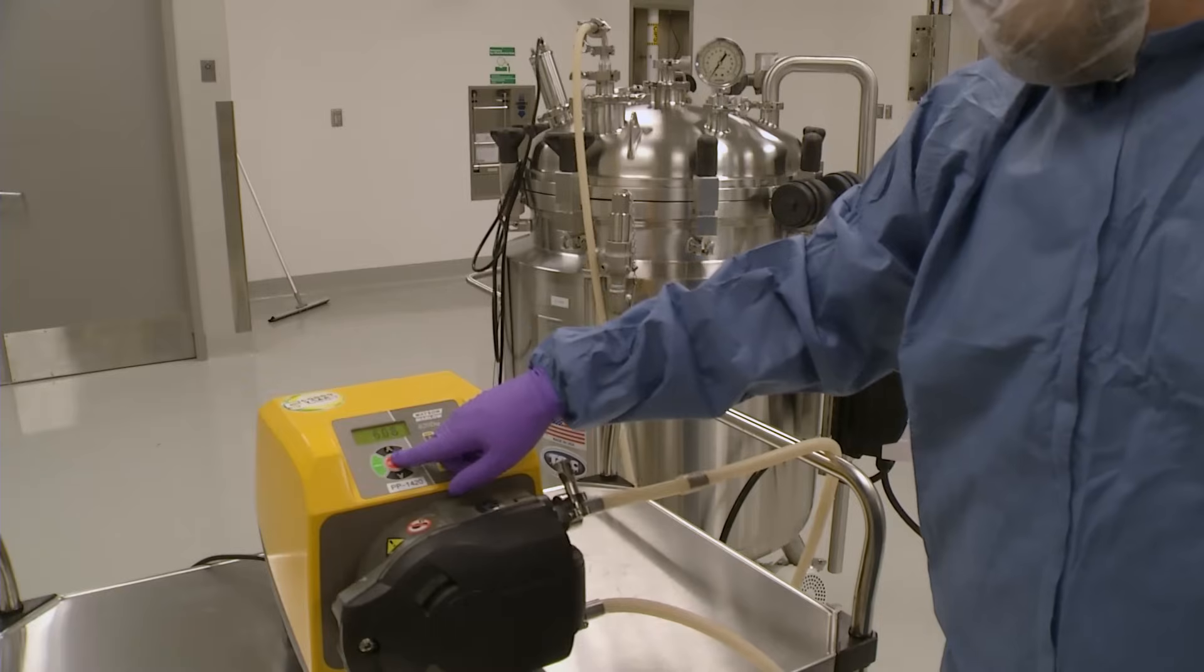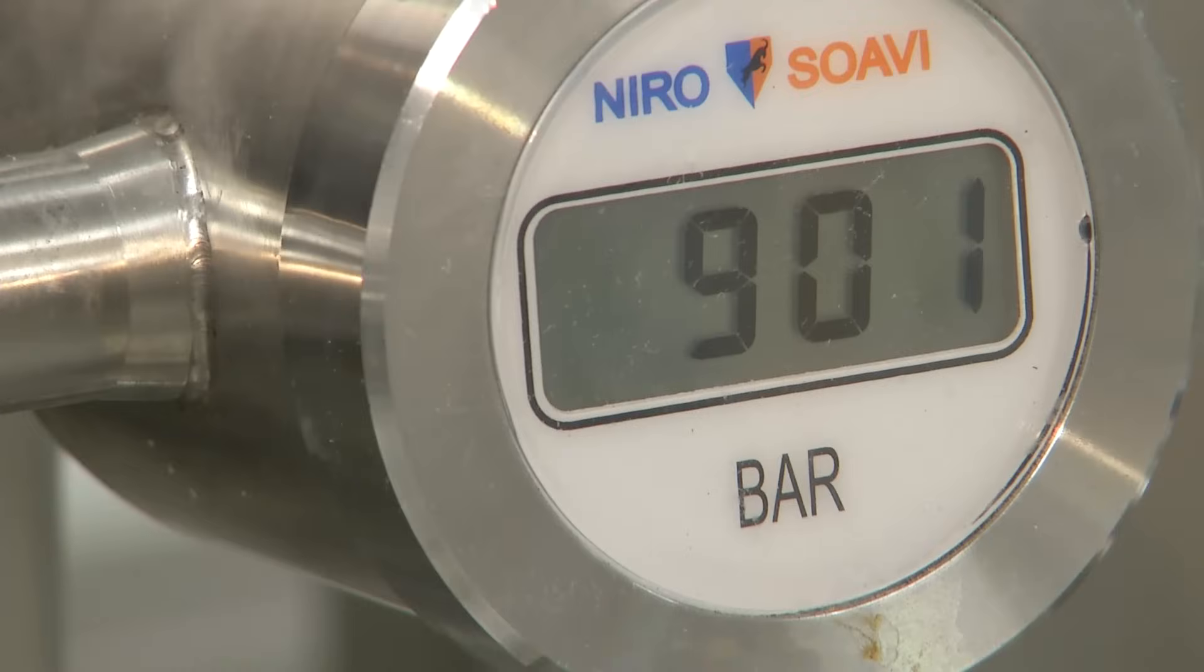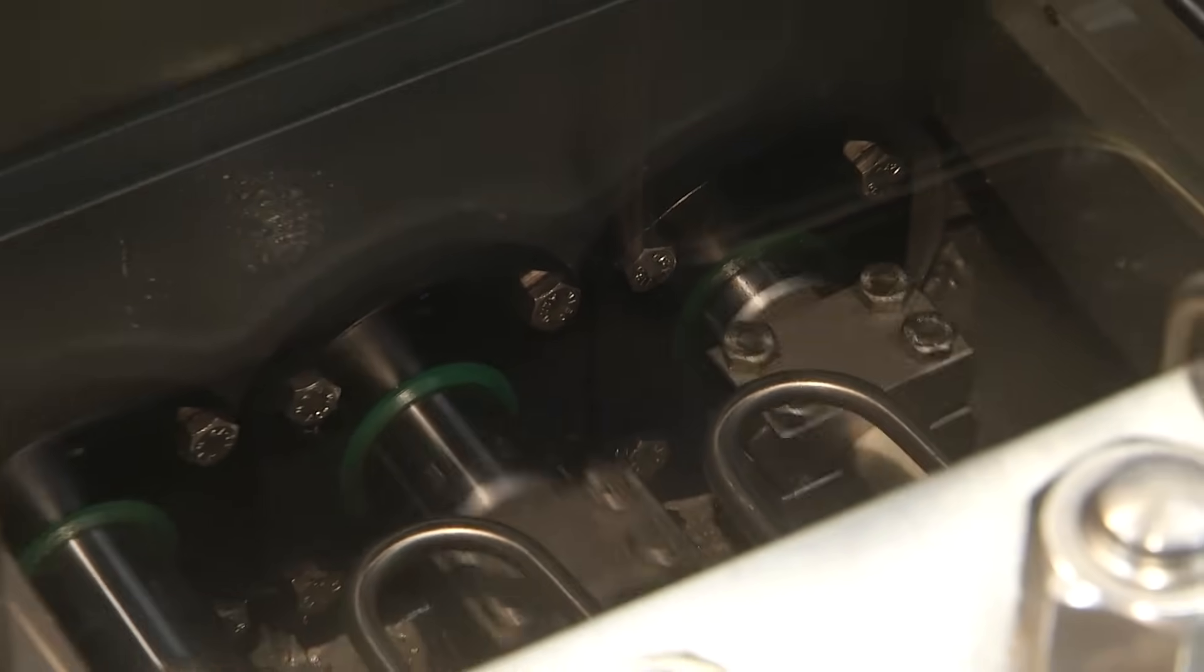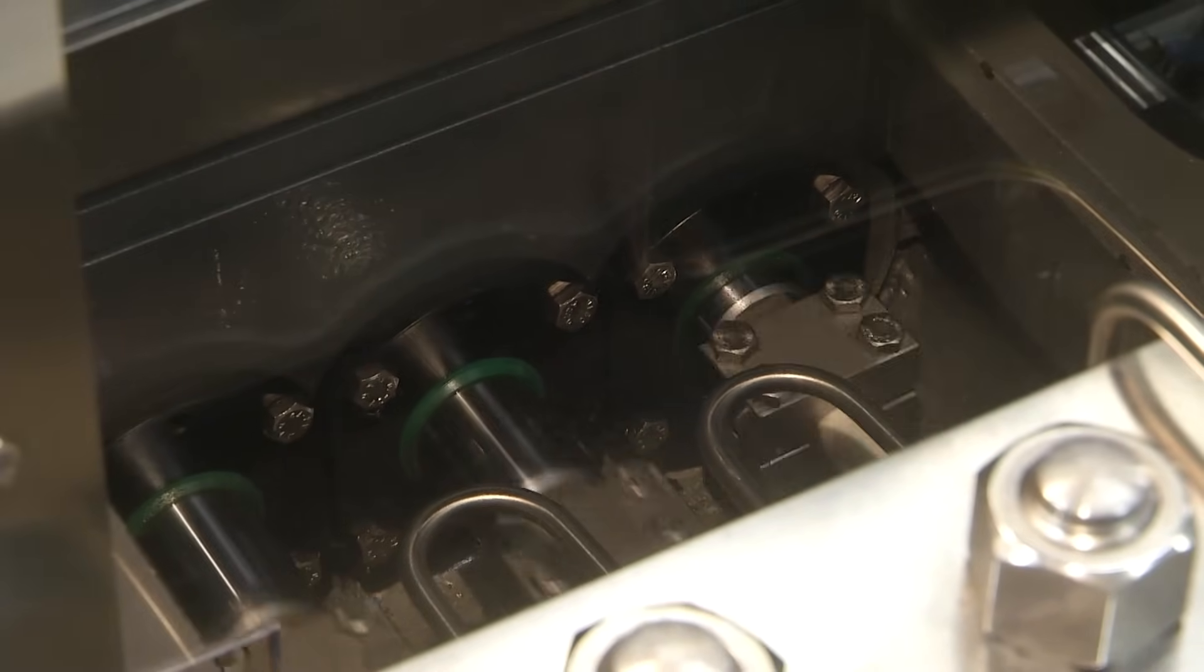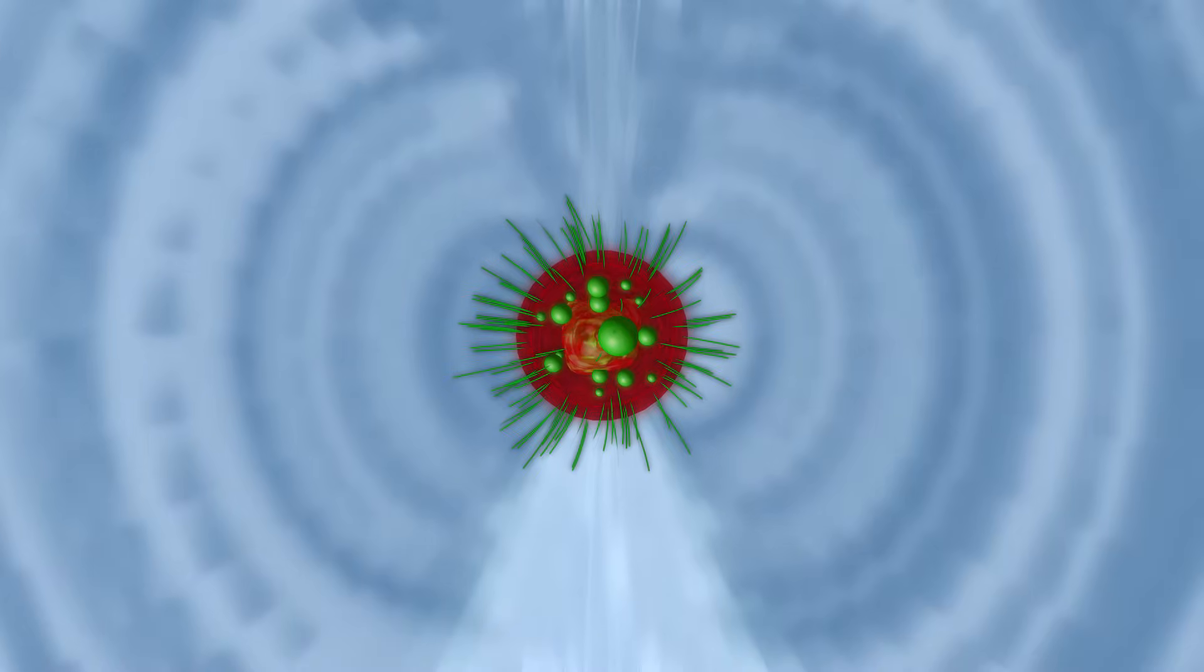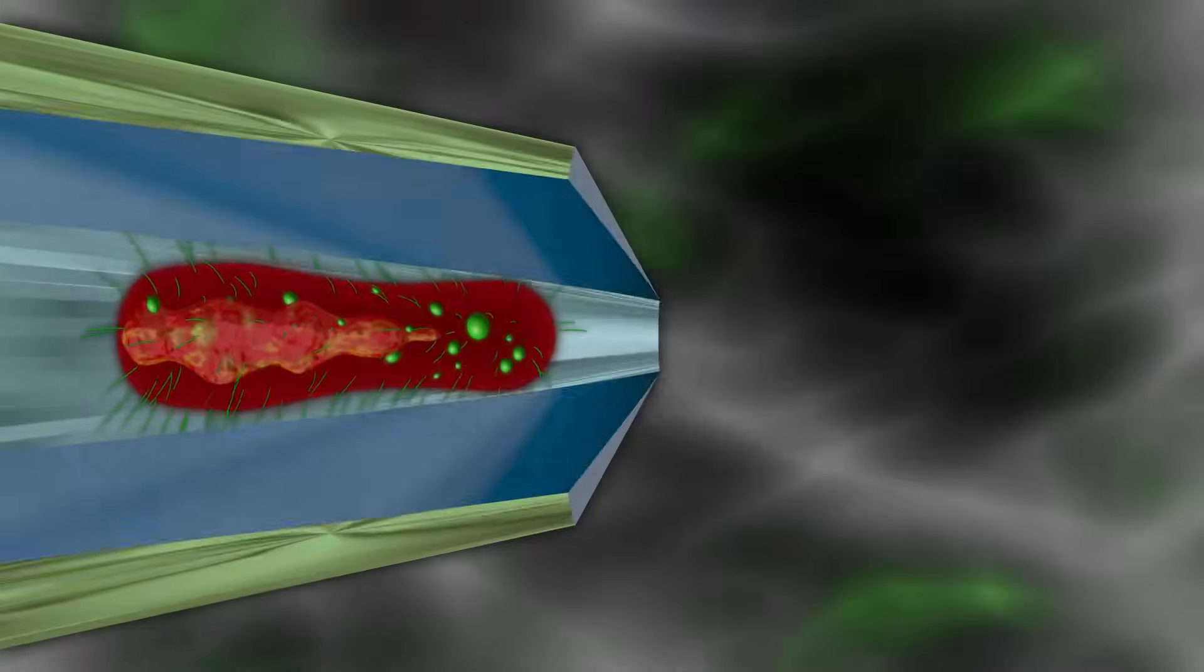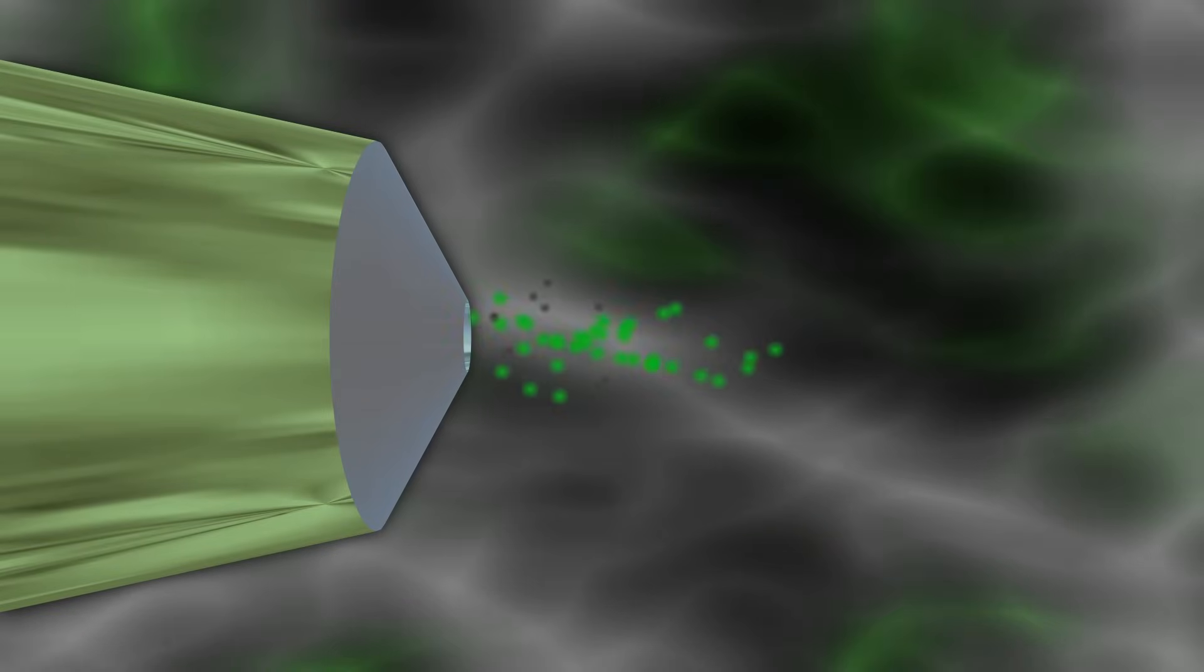The cells are resuspended in a buffered solution and then pumped at high pressure, 900 bar, which is about 13,000 pounds per square inch, through the homogenizer. Inside the homogenizer, they are forced through a tiny orifice. Just like a balloon being tightly squeezed, the cells can't take the stress and they rupture and break apart.